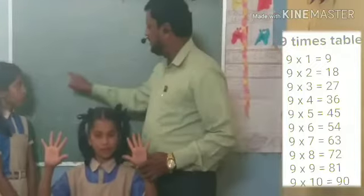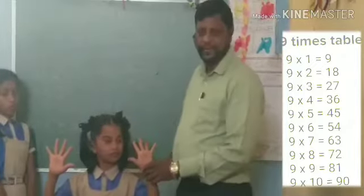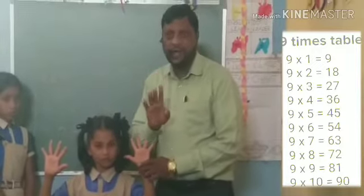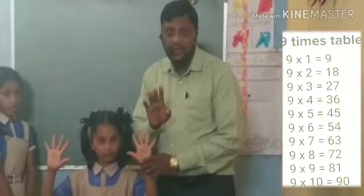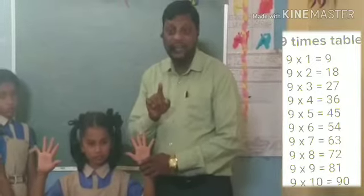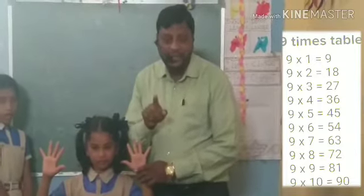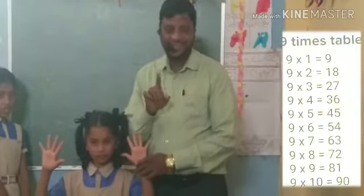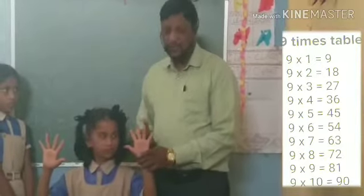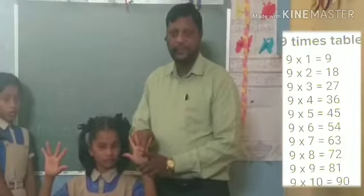Now we will see 9 times 2. I am going to open the second finger now. After closing the second finger, how many fingers are there on the after side? 1. And before the closing finger: 1, 2, 3, 4, 5, 6, 7, 8. So the answer is 18.